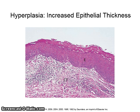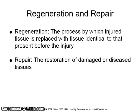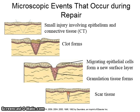This tissue slide shows the increase in epithelial thickness that accompanies hyperplasia. Regeneration is the process by which injured tissue is replaced with tissue identical to that present before the injury. Repair is the restoration of damaged or diseased tissue. There are three phases to the repair process that occur over a period of two weeks: one is inflammation, two is proliferation, and three is maturation. These figures show a small injury which involves the epithelium and connective tissue. A clot forms, the epithelial cells migrate forming a new surface layer, granulation tissue forms, and then that is followed by scar tissue.